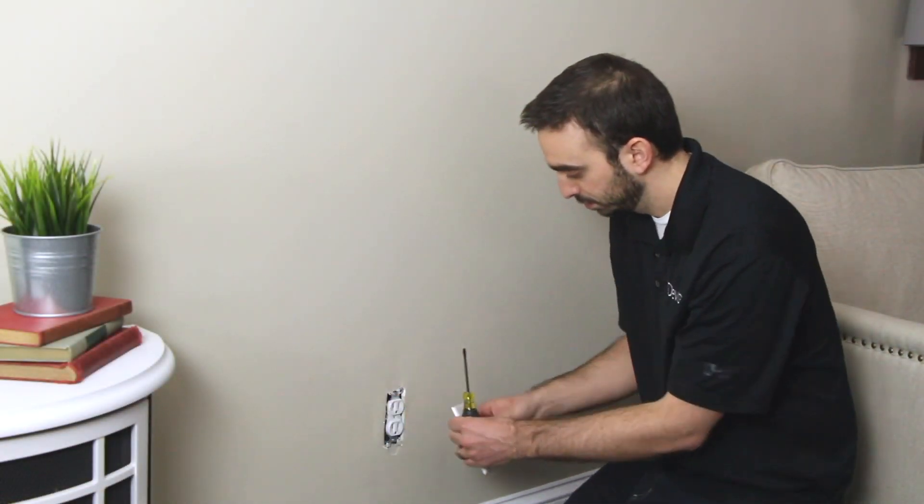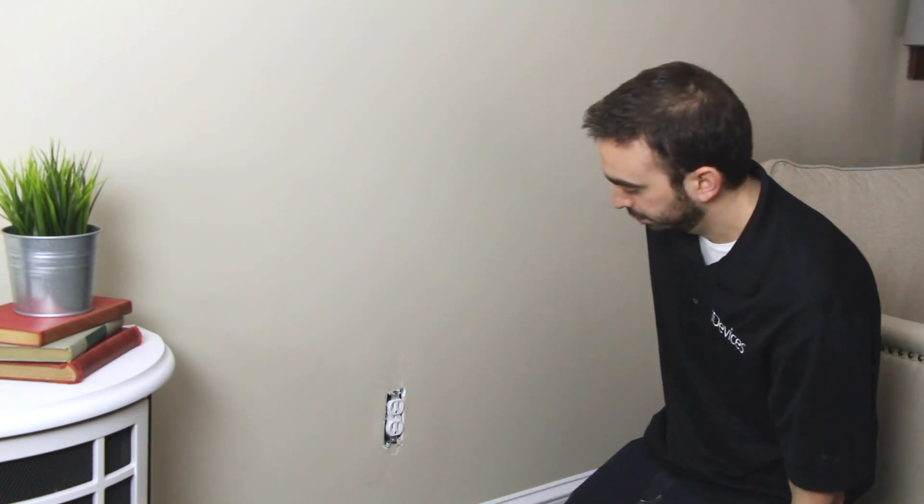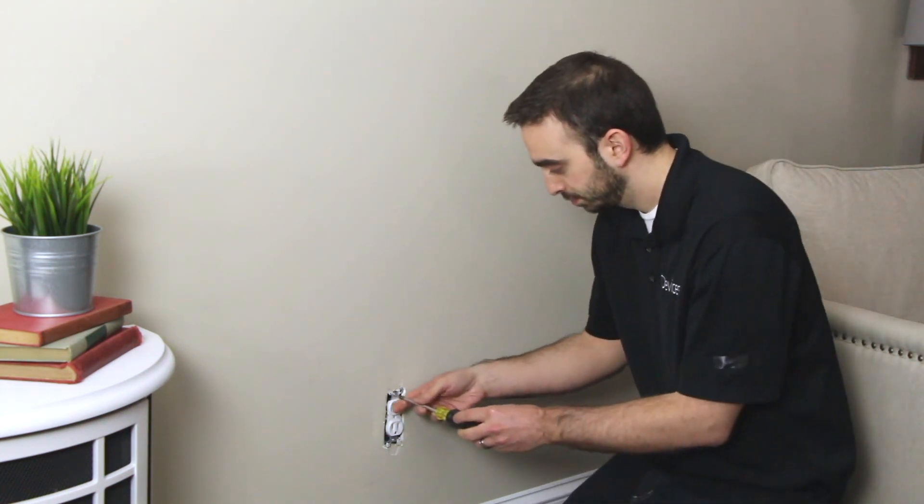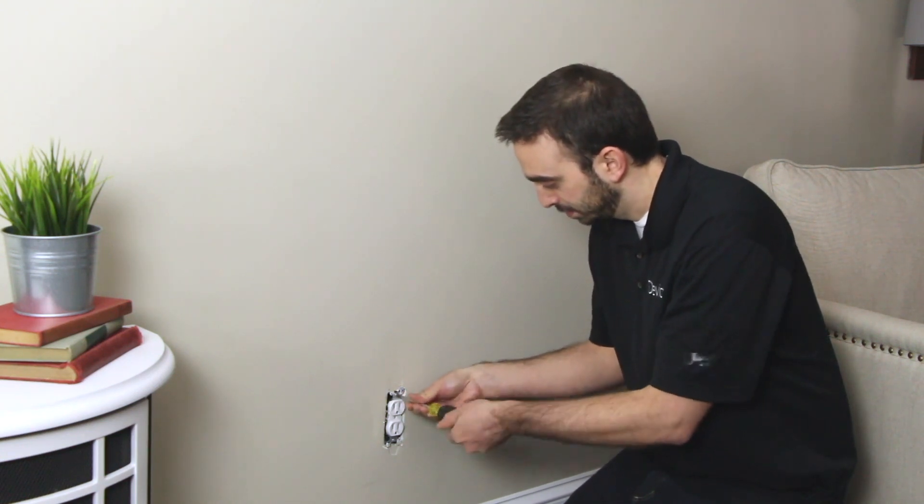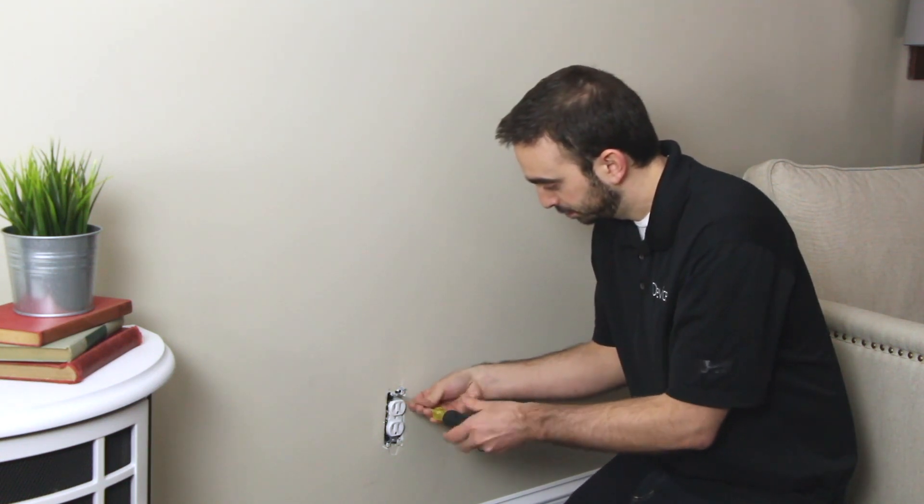Now, unscrew and remove the faceplate from the existing outlet. Next, remove the two screws that secure the outlet to the gang box.